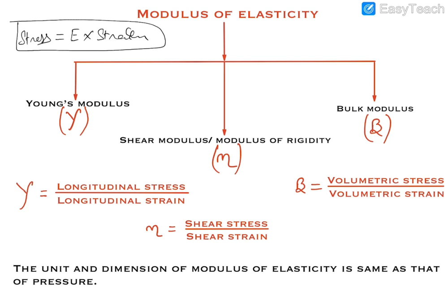We can also derive that the unit of modulus of elasticity is the same as the unit of stress, because strain has no unit and stress has the unit of pressure, which is Newton per meter square. So the modulus of elasticity has dimensions of pressure and is dimensionally equal to stress.